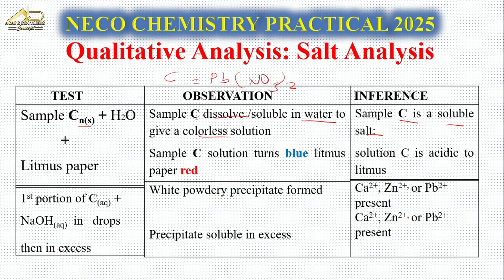We have two types of litmus paper - blue and red. The solution turns blue litmus paper red, which means the solution of sample C is acidic to litmus. Now take a portion of the dissolved solution and divide it into several portions.